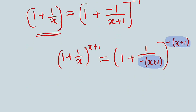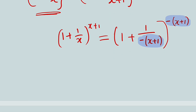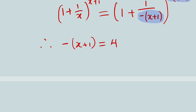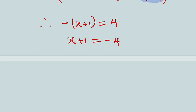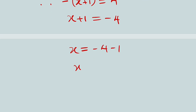So this implies that the exponent of negative (x+1) is equal to 4. Therefore, negative x plus 1 equals 4. Multiplying both sides by negative 1, we have x plus 1 equal to negative 4. Taking 1 to the right-hand side, x equals negative 4 minus 1. And finally, x equals negative 5.